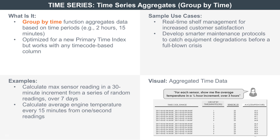The time series aggregate function is a specialized form of the aggregate function, providing an easy way of consolidating data in buckets of time. Aggregation methods range from commonly used ones such as average, count, sum, minimum, and maximum, to more complex ones such as standard deviation or variance.